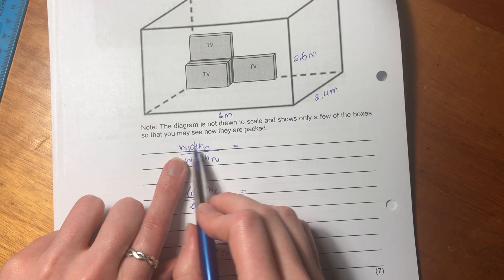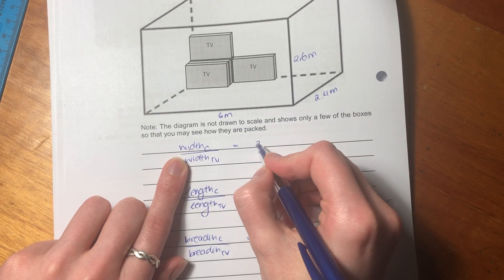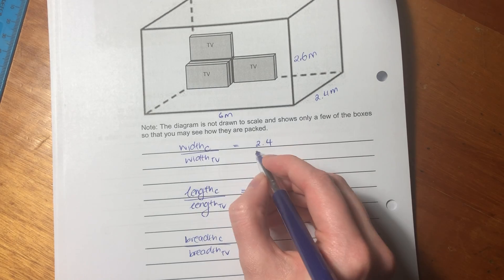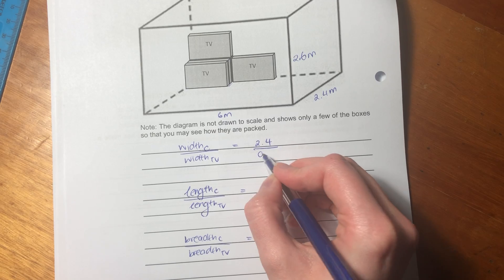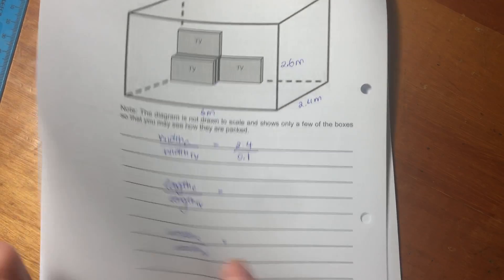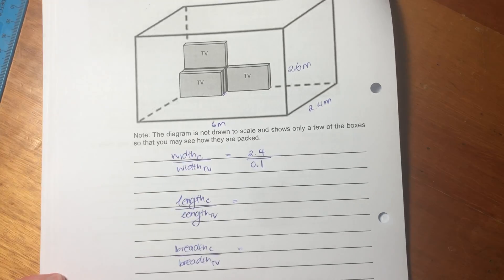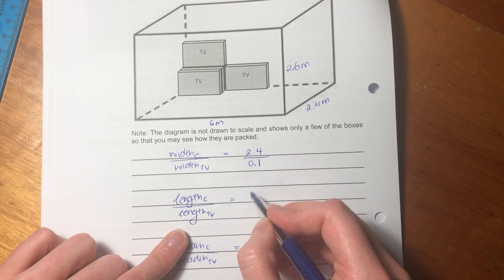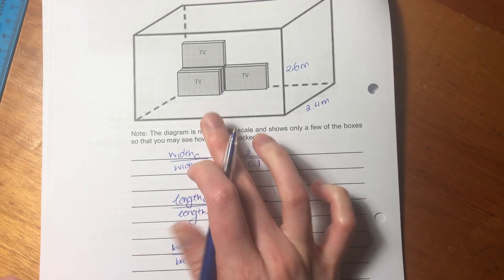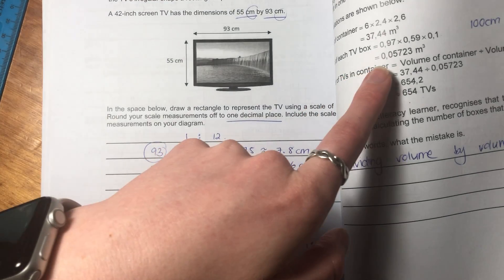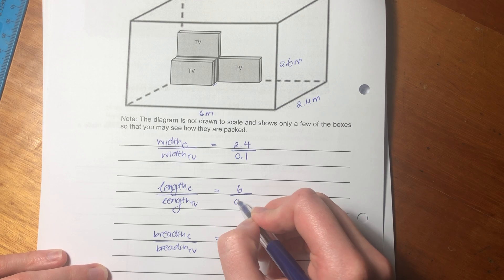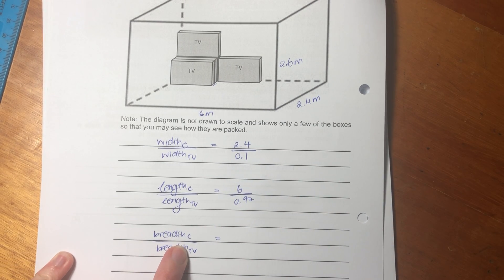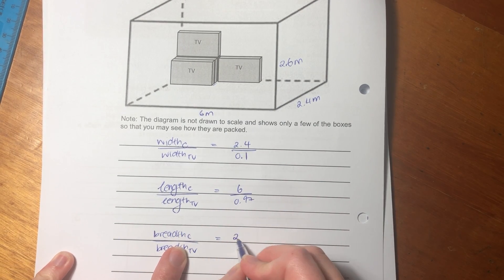So what is the width of the container? Well, it's 2.4. So then what is the width of a TV this way? It is 0.1. We have that from over here, 0.1. Then what is the length of the container? Well, it's 6 meters. What is the length of the TV? Well, we have 0.97. What is the breadth? It is 2.6. Well, you could call that the height, I guess.